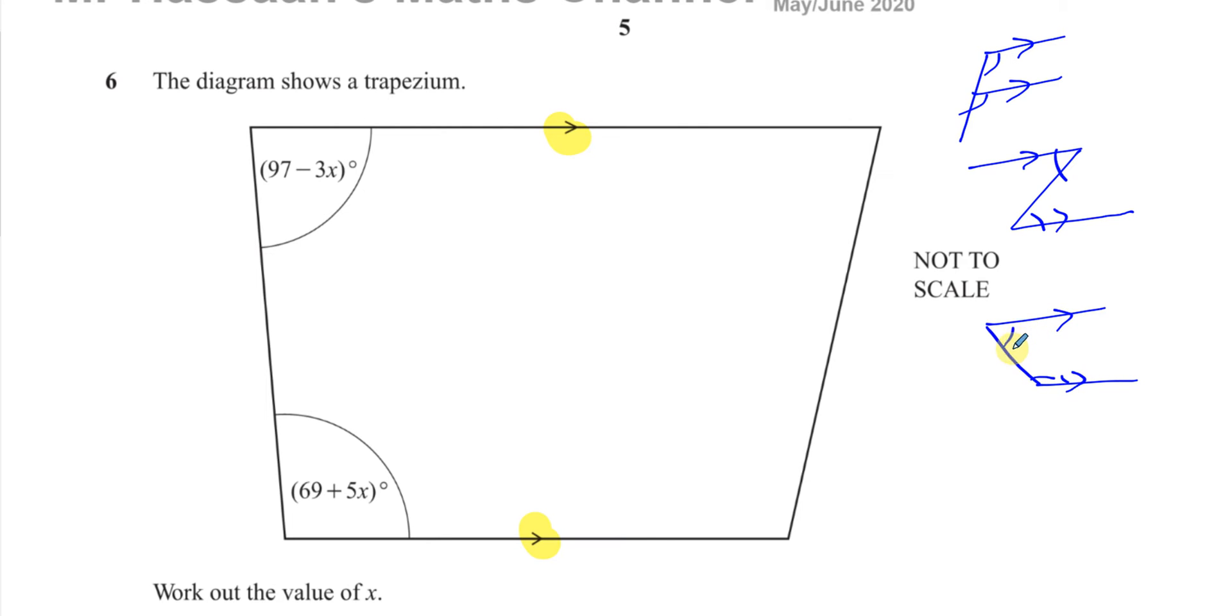With these angles which are interior, they're related by the fact that they are supplementary. They add up to 180 degrees. For corresponding and alternate angles, they are equal to each other. But for interior angles like this, their sum is 180 degrees. So these two angles will add up to 180 degrees. That's how we can link those two angles with each other.